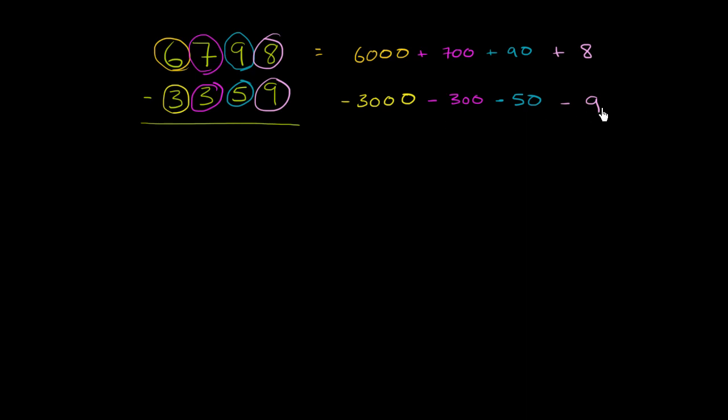But let's go back to our problem. We wanted to subtract a 9 from an 8. Well, that's a little bit of a stumbling block. But what if we could take some of the value from some of these and give it to the 8? In particular, we could go one place value up to the 90. And what if we were to take 10 from the 90? So let's do that.